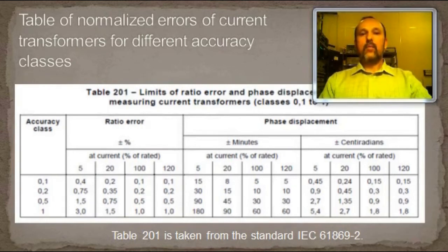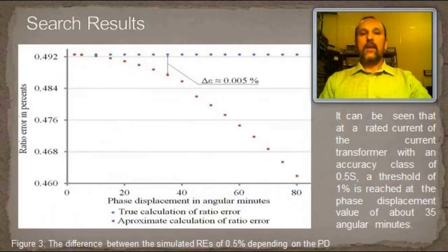Looking at table 201, it is seen that the allowable value of the phase displacement is 35 minutes. In figure 3, it can be seen that at a rated current of the current transformer with an accuracy class of 0.5s, a threshold of 1% is reached at the phase displacement value of about 35 angular minutes. It is worth noting as that for the current transformers that meet the requirements of the IEC standard for accuracy.